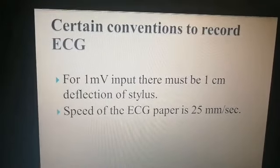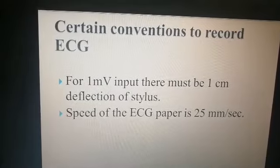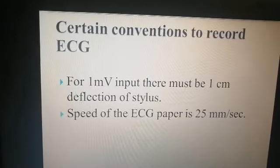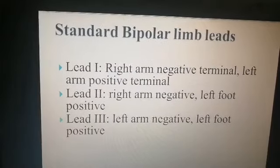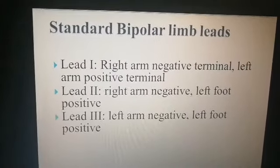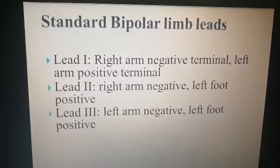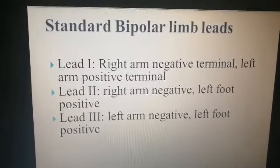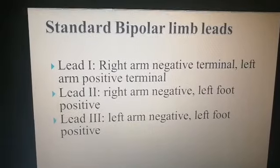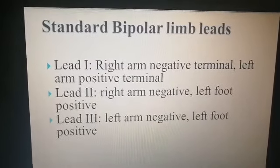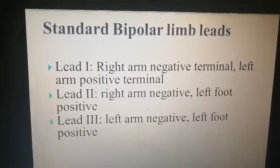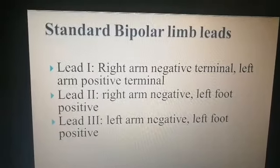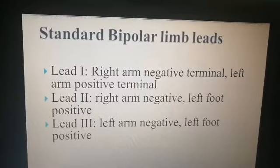When the ECG paper comes out of the ECG machine, its speed is 25 millimeters per second. Now, there are two types of ECG leads: number one is standard bipolar limb leads, and the other is unipolar limb leads.